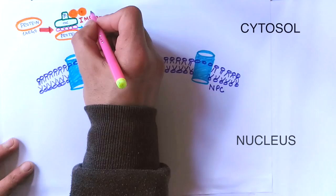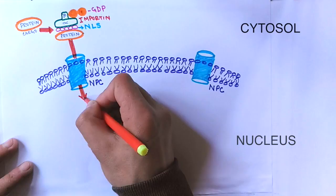This complex has RAN-GDP attached to it which provides energy for this transport, and we have the complete complex formed here, and it gets into the nucleus with the help of this RAN-GDP.